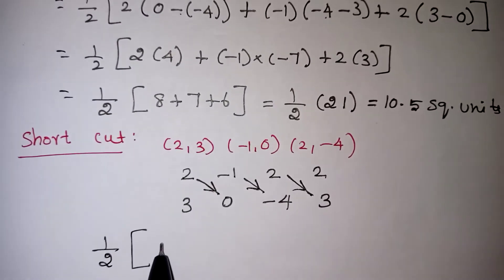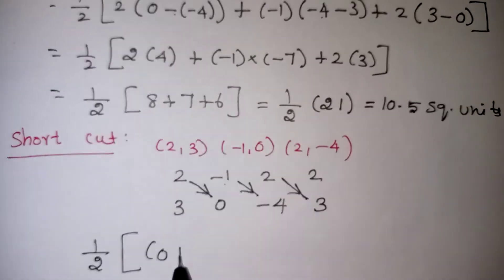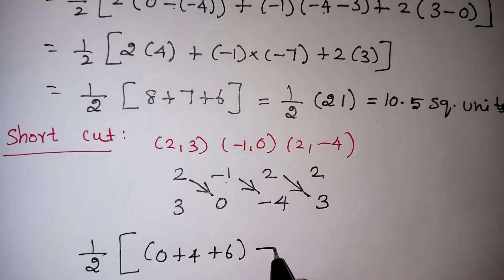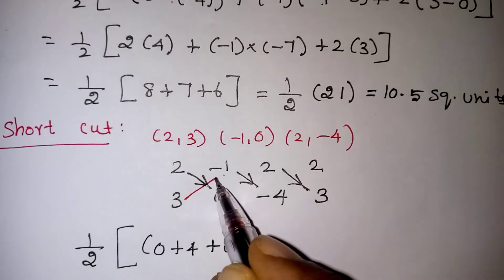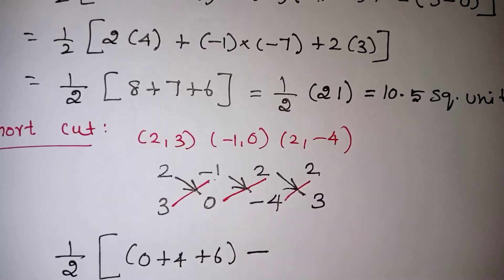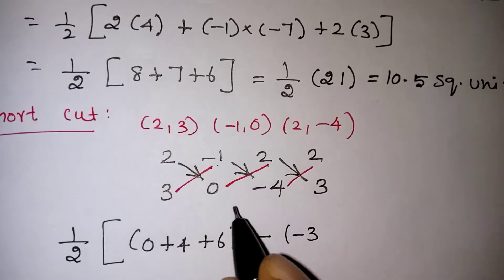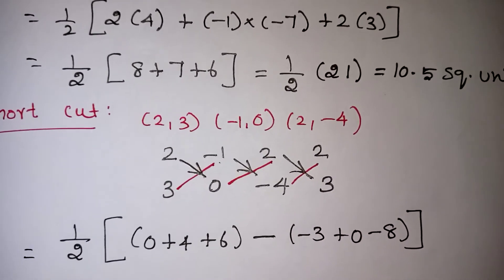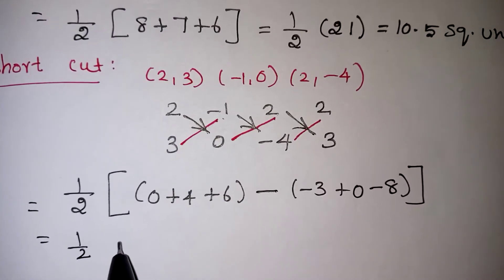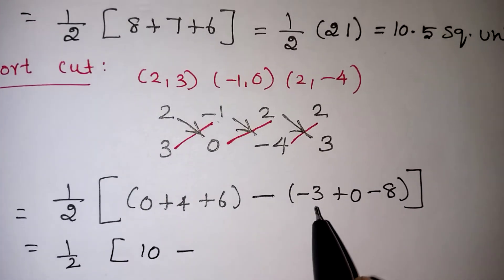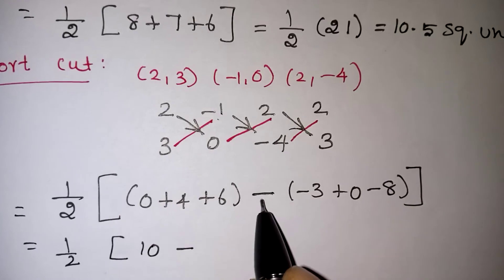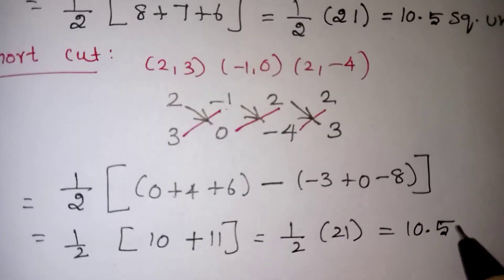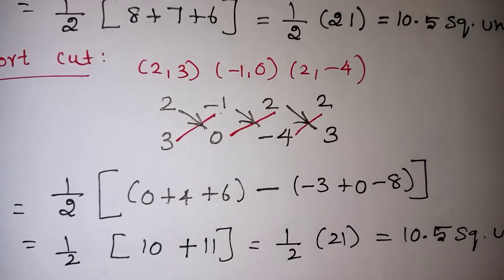Using the arrow diagram: half into — forward diagonals: 2×0 = 0, (-1)×(-4) = +4, 2×3 = 6; sum = 10. Reverse diagonals: 3×(-1) = -3, 0×2 = 0, (-4)×2 = -8; sum = -11. Now: 0 + 4 + 6 = 10, minus (-11) = 10 + 11 = 21. So half into 21 = 10.5 square units. We get the same answer of 10.5 square units.